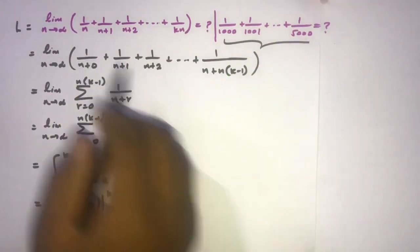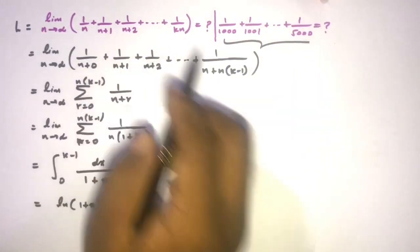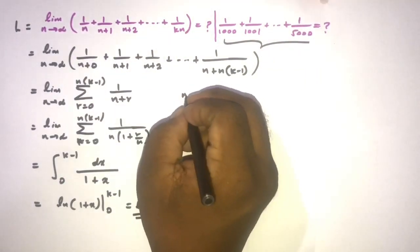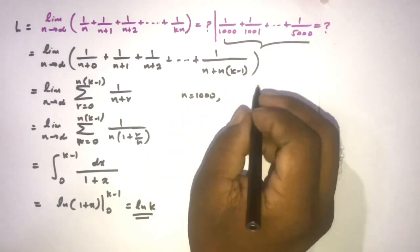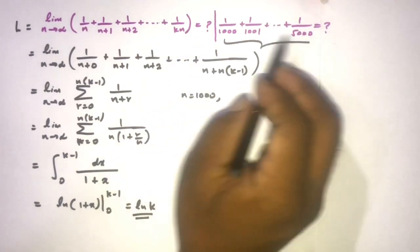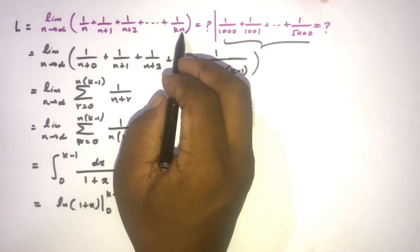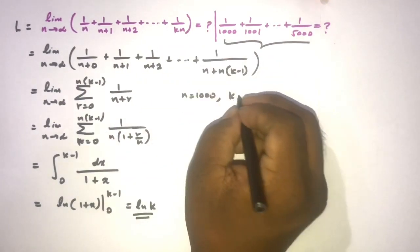And to take this expression, we know here 1 over n, so we can take when n is equal to 1000, and k is equal to here 5000, so n is 1000, so 1000 times 5, so we know k is equal to k.